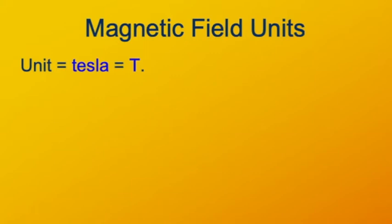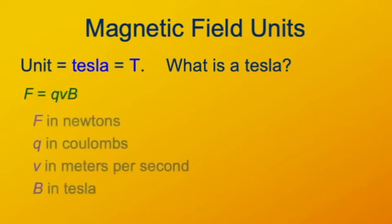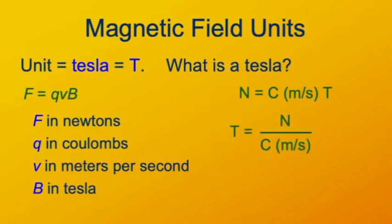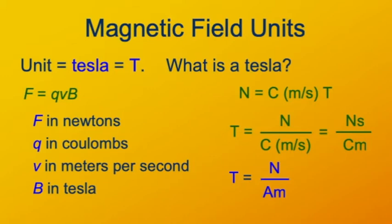Magnetic field is expressed in units of the Tesla, named after the Serbian-American electrical engineer Nikola Tesla. From F equals QV cross B, the units must satisfy: F in Newtons equals Q in Coulombs times V in meters per second times B in Tesla. Solving for Tesla gives Newton-seconds per Coulomb-meter. Since Coulombs per second is amperes, the Tesla is often expressed as a Newton per ampere-meter.